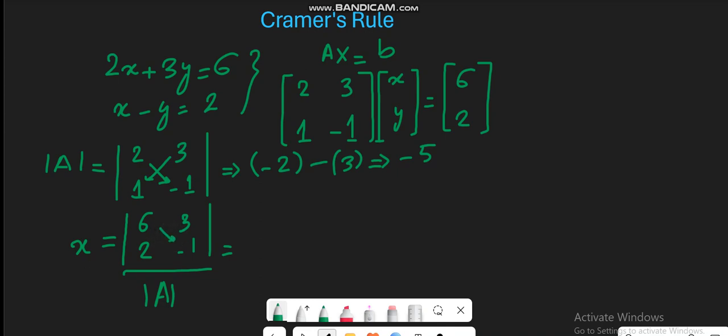So 6 into minus 1 is equal to minus 6, then minus from the formula, and 3 into 2 is equal to 6, divided with the determinant of A, which is equal to minus 5 in this case. So it's equal to minus 12 divided by minus 5, and on further simplification you can write it as 12 over 5.